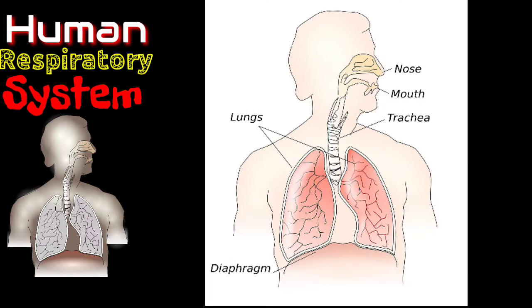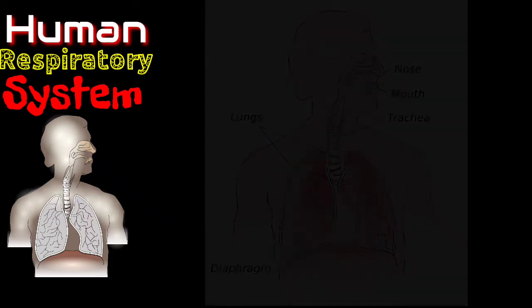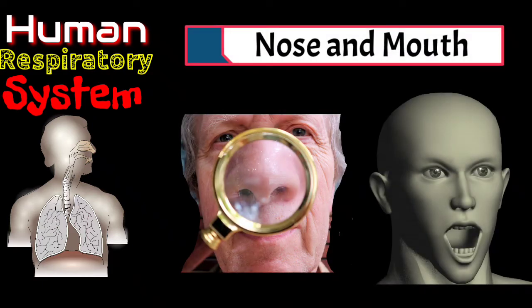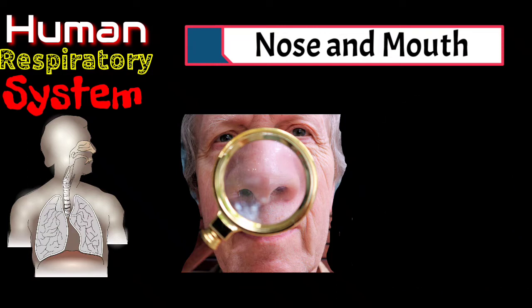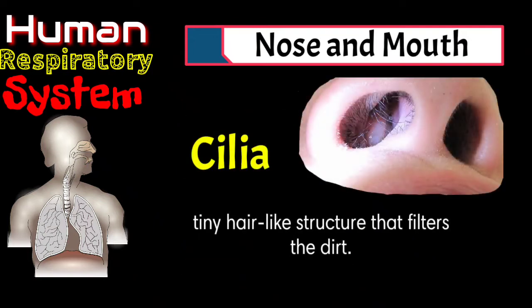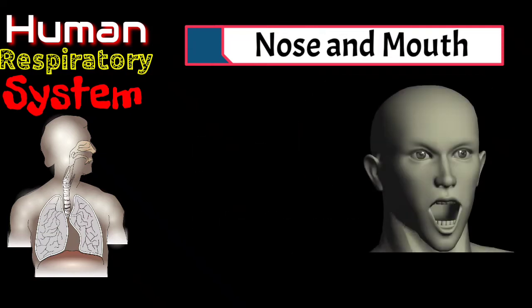Here is the overview picture of the respiratory system. The nose and mouth — this is where it all begins. This is where oxygen first enters your body, and also where carbon dioxide leaves. When air comes into your nose, it gets filtered by tiny hairs called cilia, and it is moistened by mucus. Air also gets into your body through your mouth or oral cavity, but air is not filtered as much when it enters through your mouth.